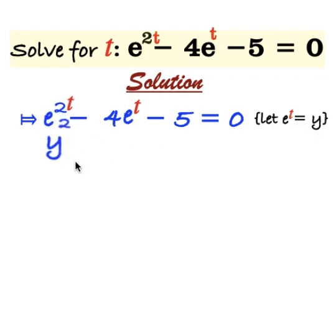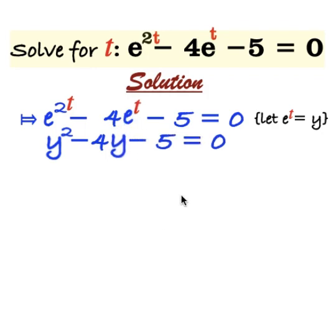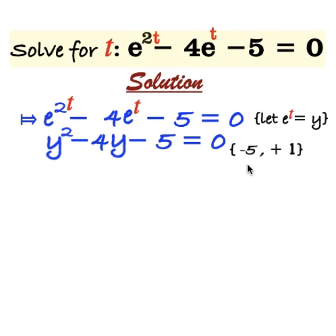Therefore, y raised to the power 2 minus 4y minus 5 is equal to 0. This is a quadratic equation. To factorize this quadratic equation, we get the factors of minus 5 that add to give minus 4, and that is minus 5 and plus 1.